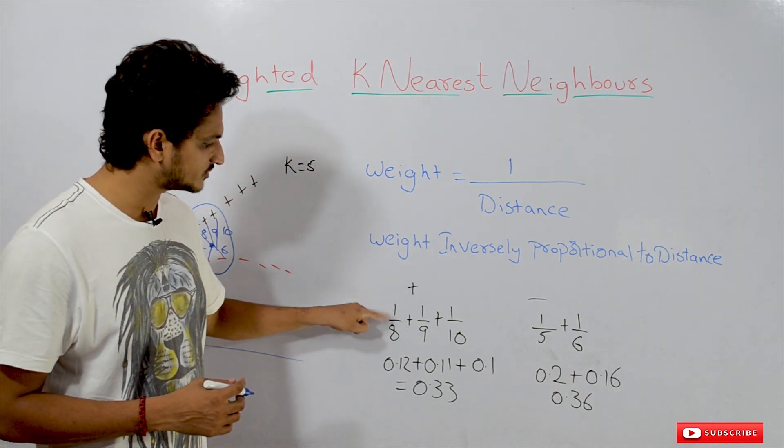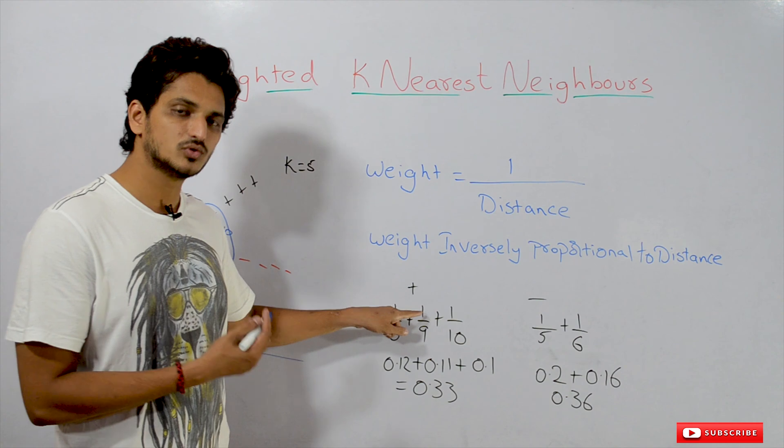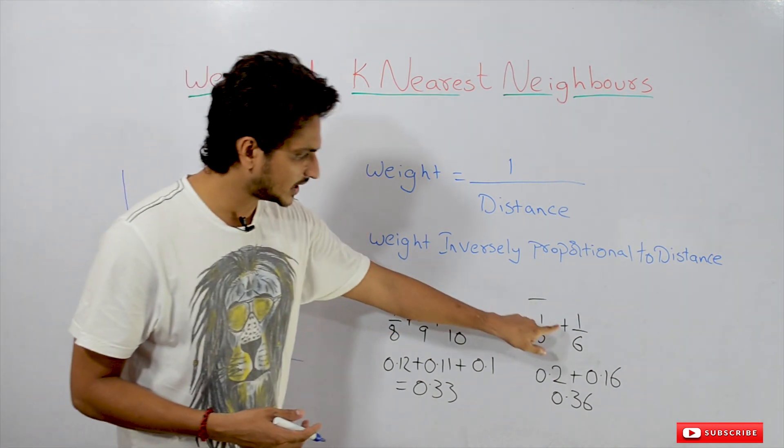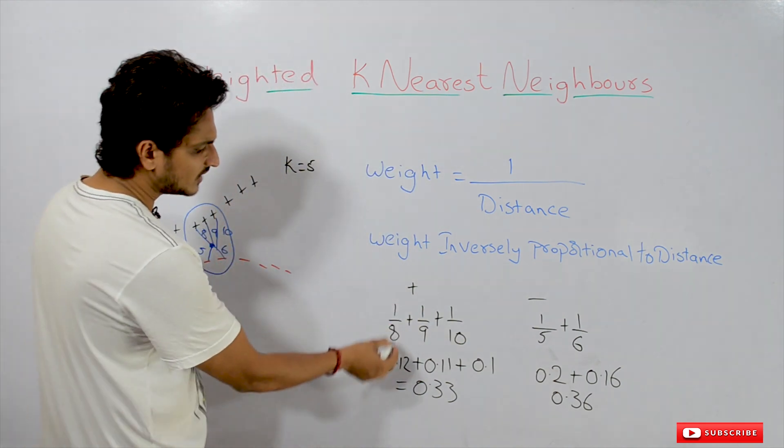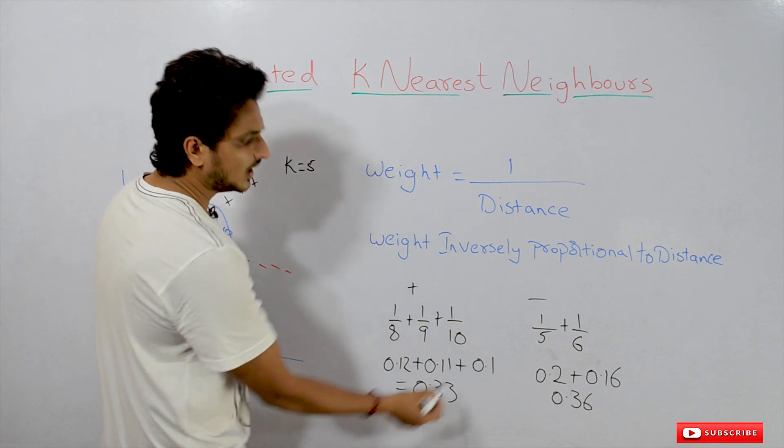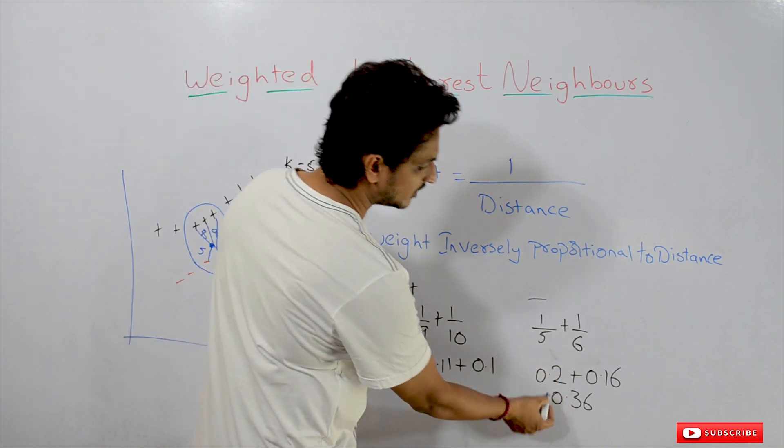1 by 8 for positive points, 1 by 8 plus. So we have to do sum of all the positive weights and sum all the negative point weights. 1 by 8 plus 1 by 9 plus 1 by 10, we got 0.33. And 1 by 5 plus 1 by 6, we got 0.36.